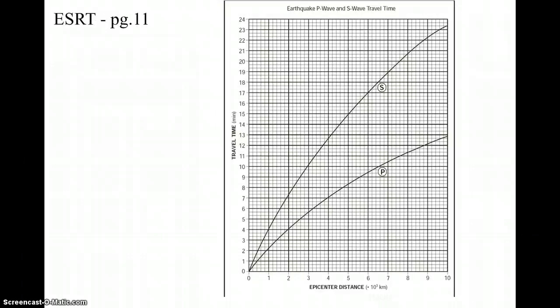In your reference table on page 11 is a very important chart that you're going to get a lot of practice with over the next week or two. It's called the P wave and S wave travel time chart. Take out your reference table — we're going to annotate it and I'm going to walk you through how to use this chart at a basic level.